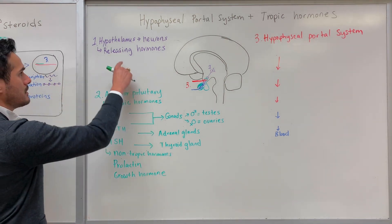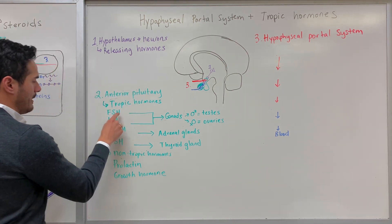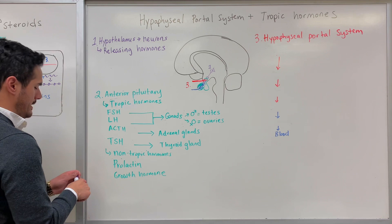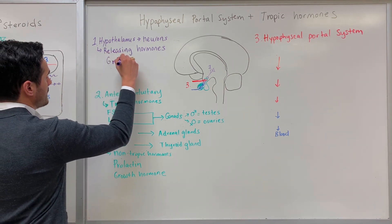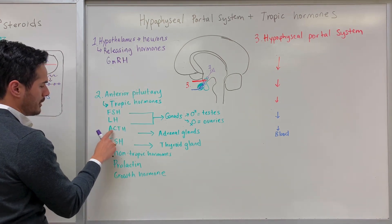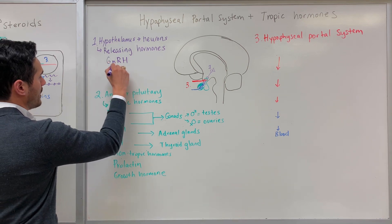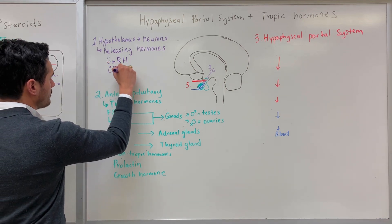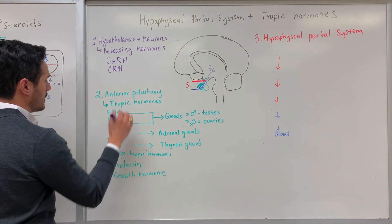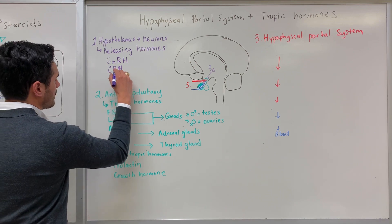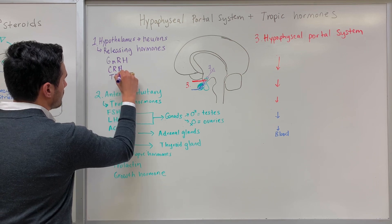Now, what about these releasing hormones? FSH and LH require gonadotropin releasing hormone. For adrenocorticotropic hormone, we have corticotropin releasing hormone. And for thyroid stimulating hormone, it's thyrotropin releasing hormone.